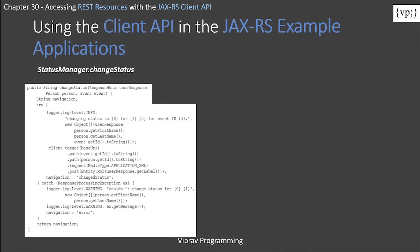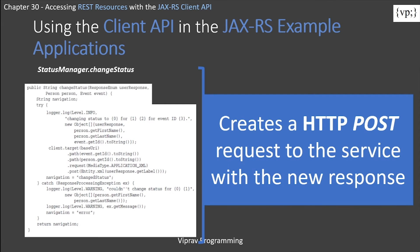Then there's a status manager changeStatus, which is used to update the client's response choice. All this does is create an HTTP POST request to the service with the new response — it changes whatever you selected and updates the table that you saw before. And that's all there is about accessing REST resources using the JAX-RS client API.